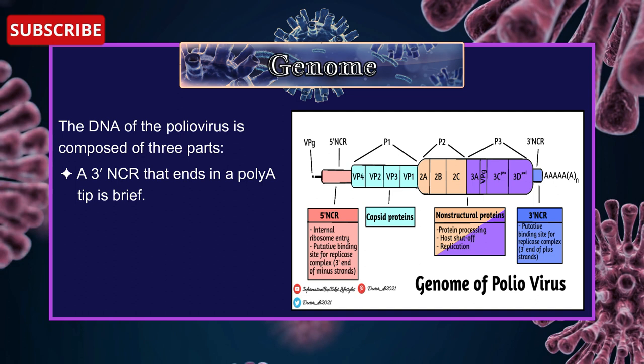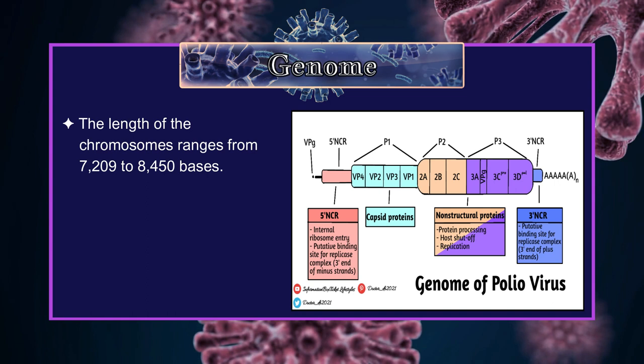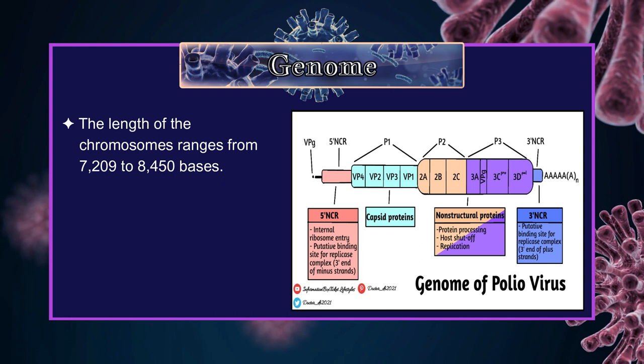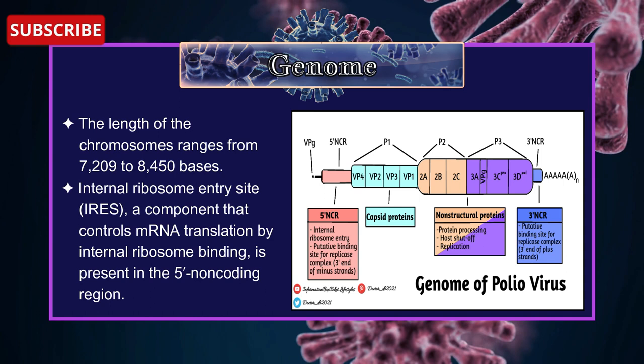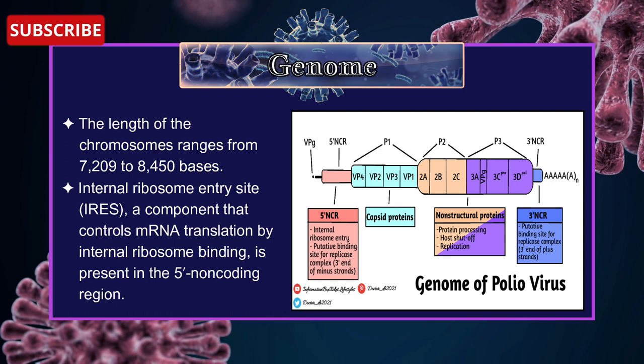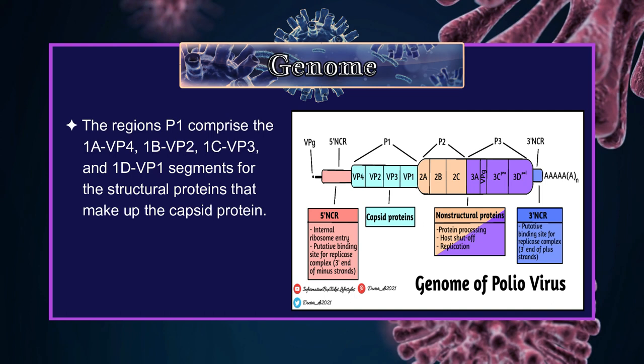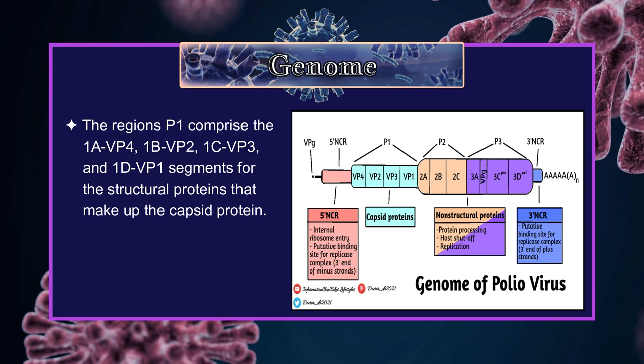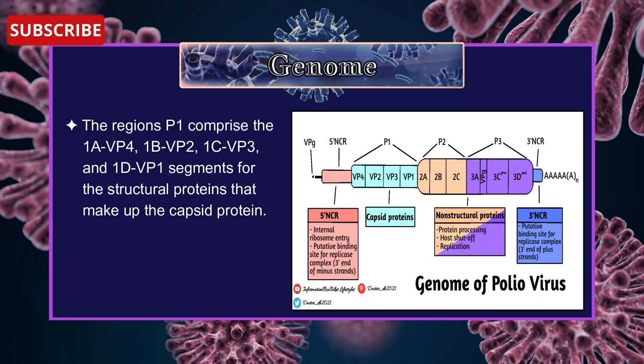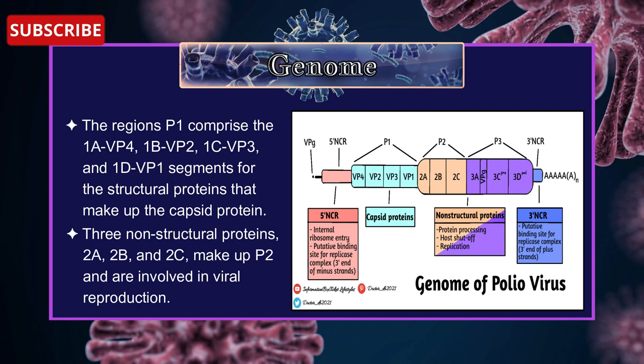The length of the genome ranges from 7209 to 8450 bases. An internal ribosome entry site, a component that controls messenger RNA translation by internal ribosome binding, is present in the 5' non-coding region. The region P1 comprises the 1A/VP4, 1B/VP2, 1C/VP3 and 1D/VP1 segments for the structural proteins that make up the capsid. Three non-structural proteins 2A, 2B and 2C make up P2 and are involved in viral reproduction.